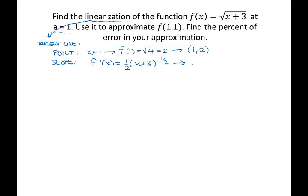So the derivative at 1 is one over two times the square root of 1 plus 3, which is one over two times the square root of 4, which is 2 — giving us one fourth. That's the slope of the tangent line at (1, 2). So the equation for the tangent line is y minus 2 equals one fourth times (x minus 1).